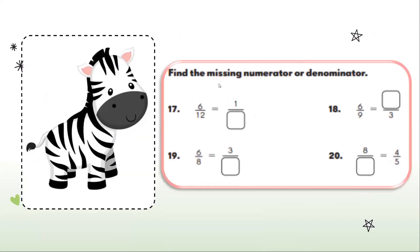Here we have find the missing numerator or denominator: 6 over 12 is equal to 1 over what? I'll move from the smaller to the bigger and ask, 1 times what is equal to 6? Yes, it's 1 times 6, so my factor is 6. Then I ask, 6 times what will give me 12? Yes, 6 times 2.